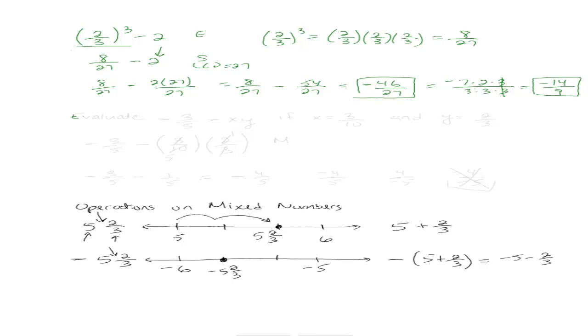Let's try one more. Evaluate negative 3 fifths minus xy if x equals 3 tenths and y equals 2 thirds. So it's really the same type of problem.